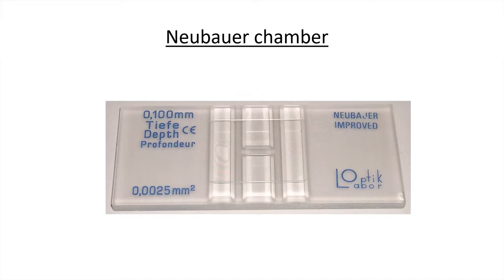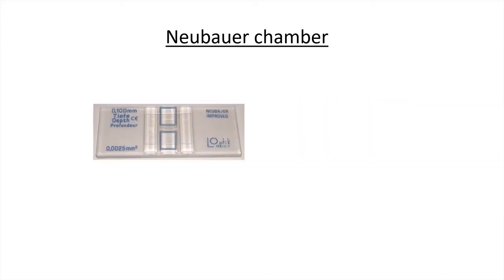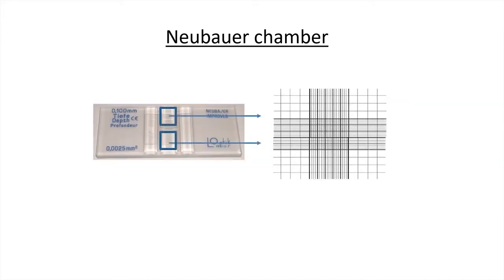It is a thick glass slide with transverse and longitudinal grooves that divide the chamber into four zones. Two lateral zones where the cover slip is placed, and two central zones where the blood sample is deposited and the cell count can be carried out, thanks to the existence of a grid visible under the microscope.